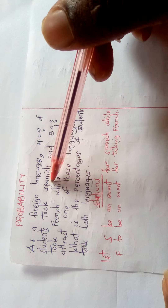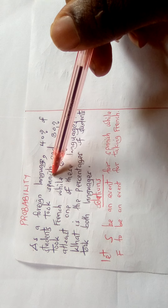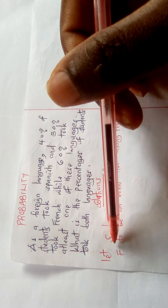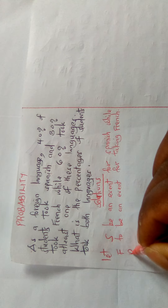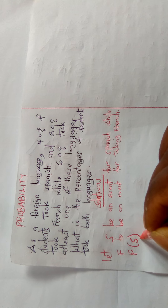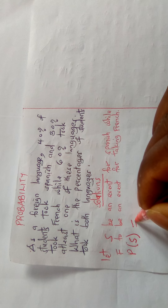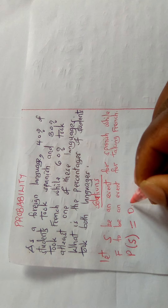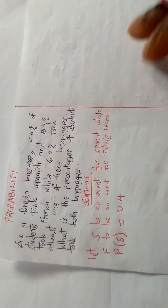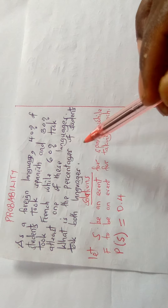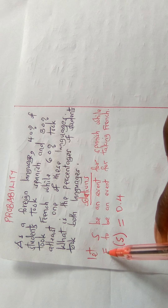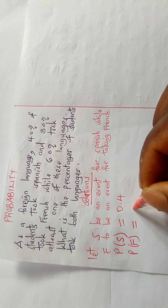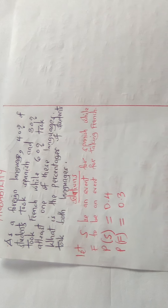We've been told that 40% of the students took Spanish, so the probability of taking Spanish is 40%. Since Spanish is represented by S, we write: P(S) = 40%, which in decimal is 40 over 100, giving us 0.4. We've also been told that 30% took French, so P(F) = 0.3, because 30 over 100 is 0.3.